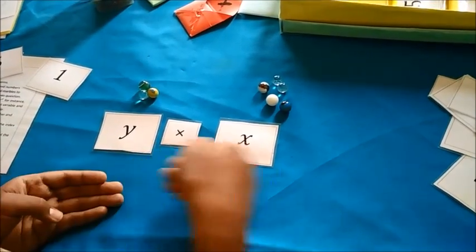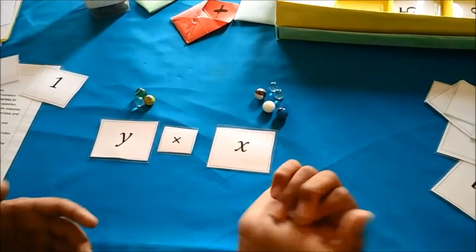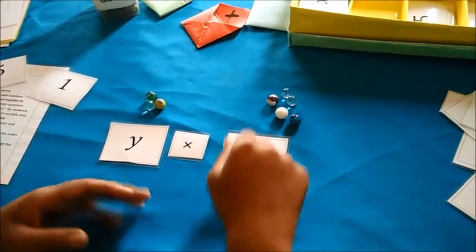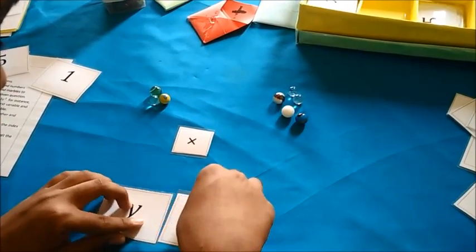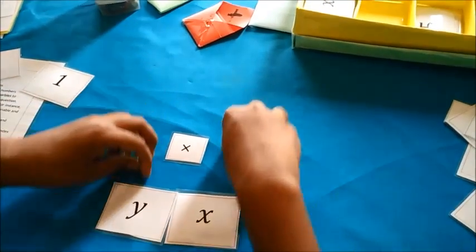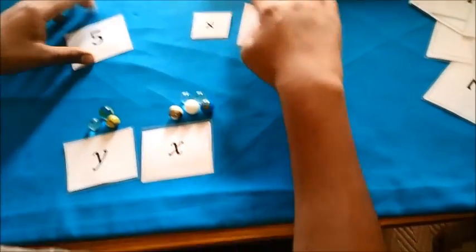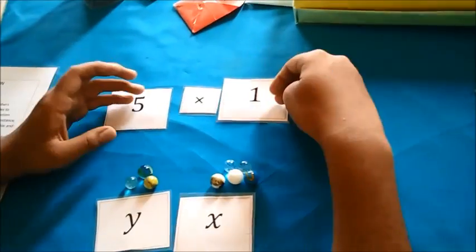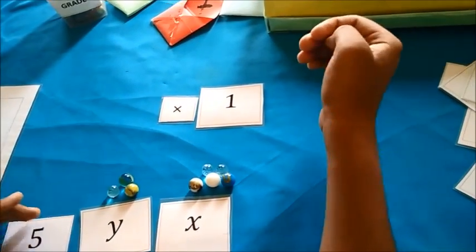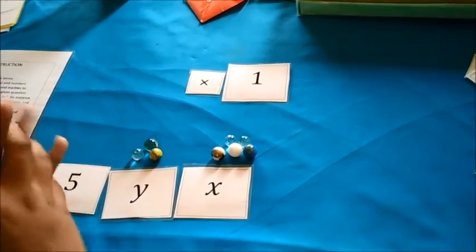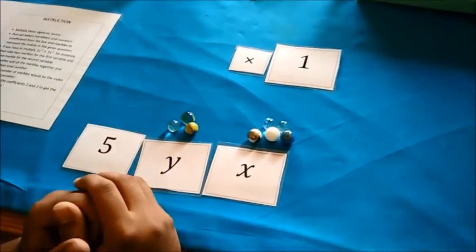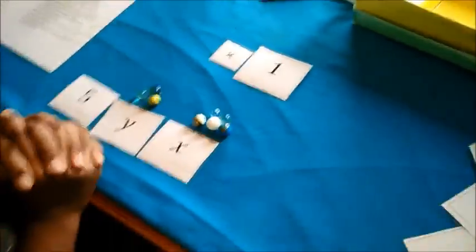So first let's keep the number aside, then let's keep the variables aside. So let's see, here, are they the same? No. So what can you do? You cannot add the powers. What you can do is put them together and put their powers on top of them. And now concentrate on the number. So 5 multiplied by 1 is therefore 5.